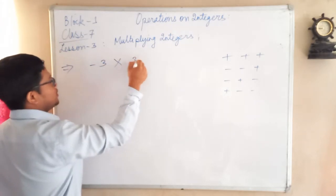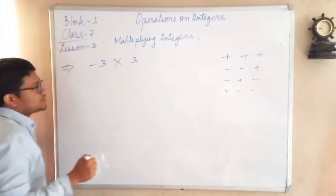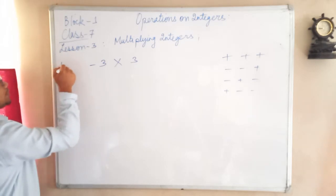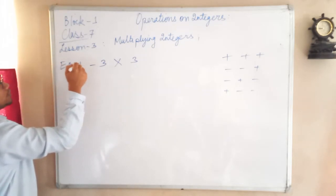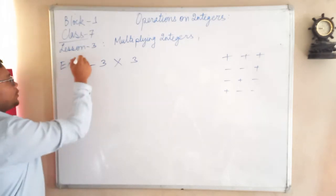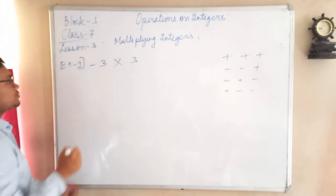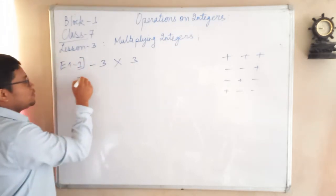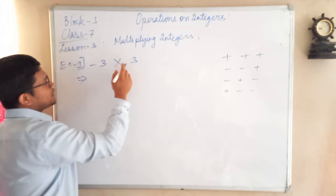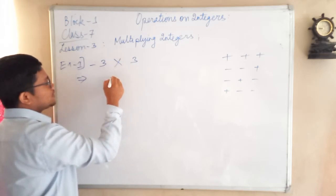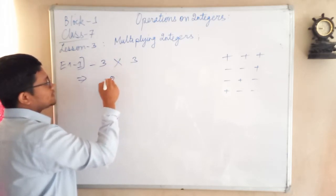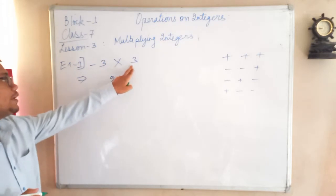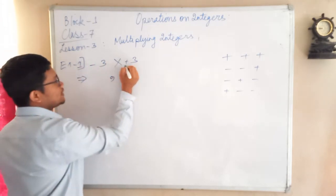Multiplying integers is similar to normal multiplication. For example, let us take minus 3 into 3. What I am doing is multiplying minus 3 with 3. You just have to multiply 3 and 3, which gives 9. But not only the numbers — you have to multiply the signs as well.